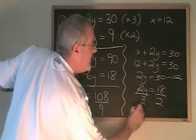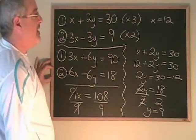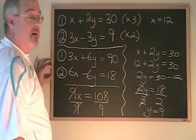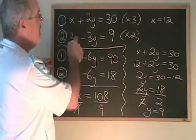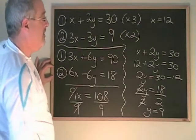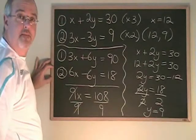If we divide both sides by 2, our y is isolated, and it's equal to 9. So the answer to the system of equations, the solution, the point where these two lines would cross if we were to graph them, is going to be 12, 9.